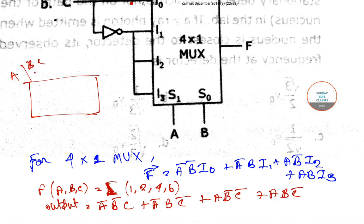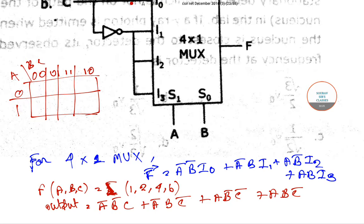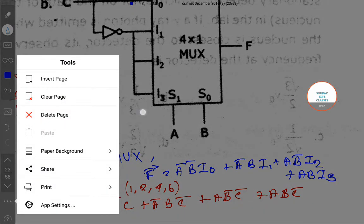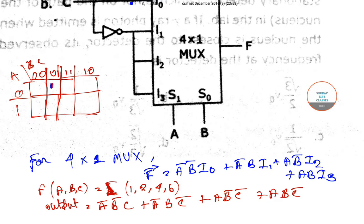On the K-map, with variables a, bc, and columns 00, 01, 11, 10 and rows 0, 1: minterm 1 is 001 (zero-one), minterm 2 is 010 (zero-one zero), minterm 4 is 100, and minterm 6 is 110. These corresponding blocks are marked as 1.